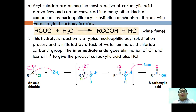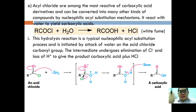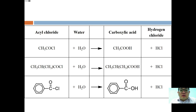Acyl chlorides are among the most reactive carboxylic acid derivatives and can be converted into many other compounds by nucleophilic acyl substitution. Reacting with water yields carboxylic acid: COCl + H2O → COOH + HCl. The mechanism starts with water acting as a nucleophile attacking the partial positive carbon, followed by deprotonation to form the carboxylic acid and HCl as a side product. Examples: ethanoyl chloride forms ethanoic acid, 2-methyl propanoyl chloride forms 2-methyl propanoic acid, and benzoyl chloride forms benzoic acid, all producing HCl observed as a white fume.